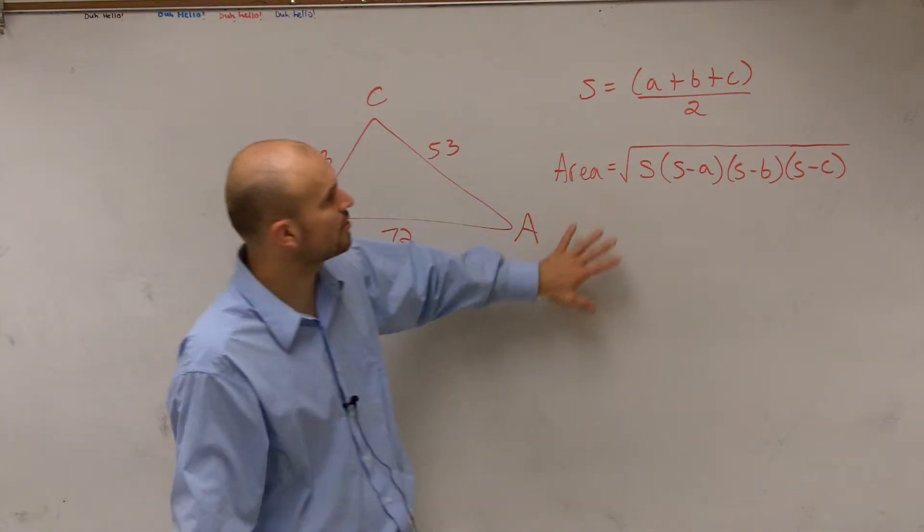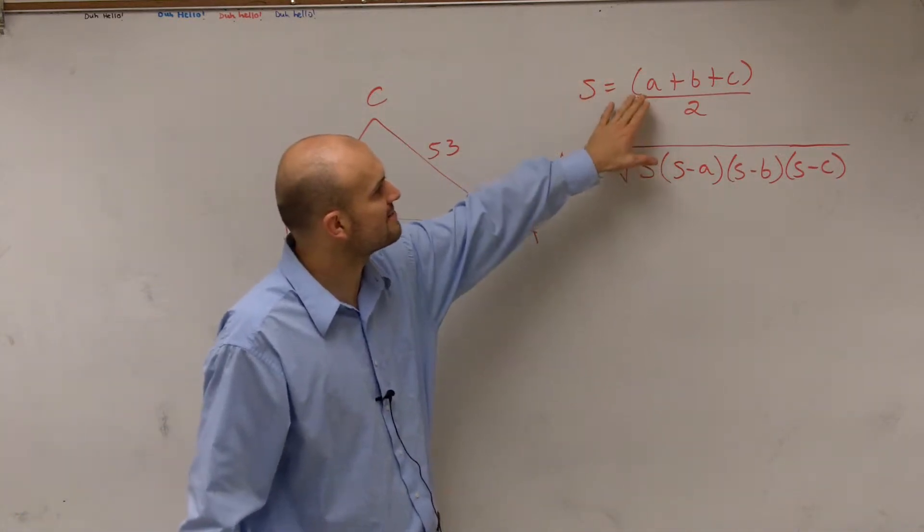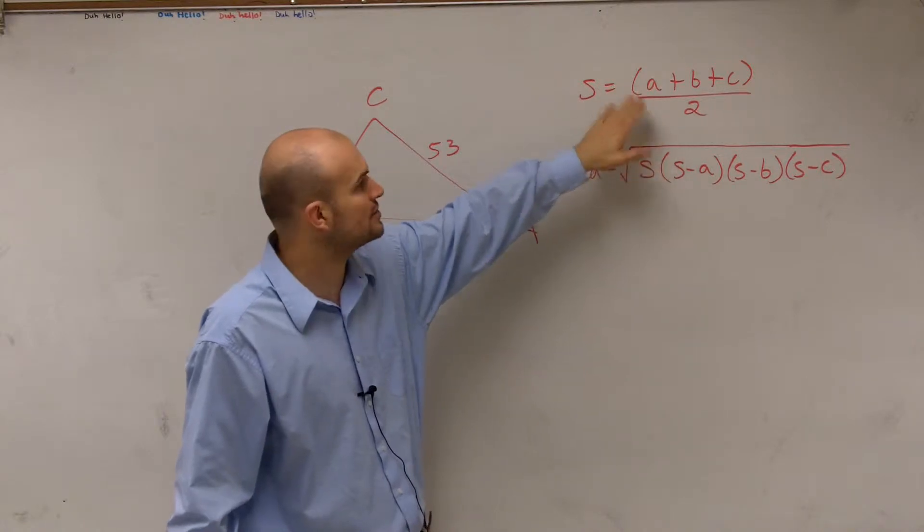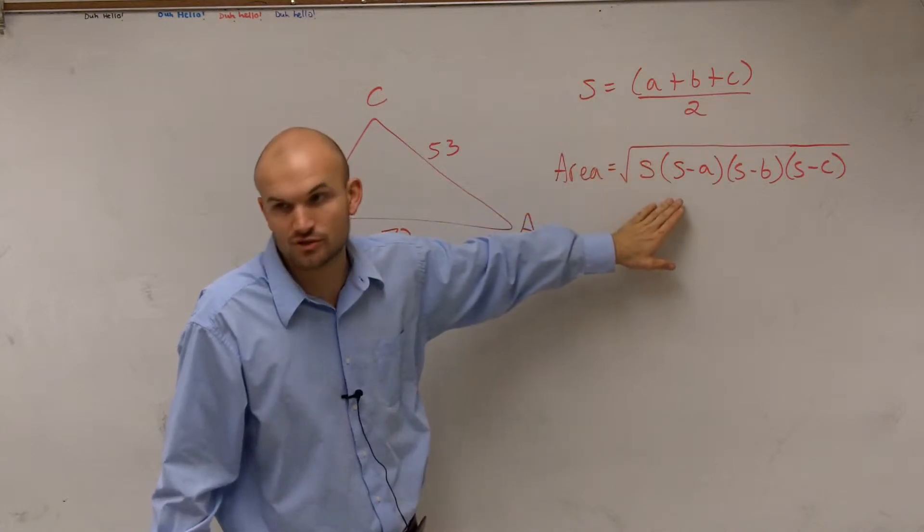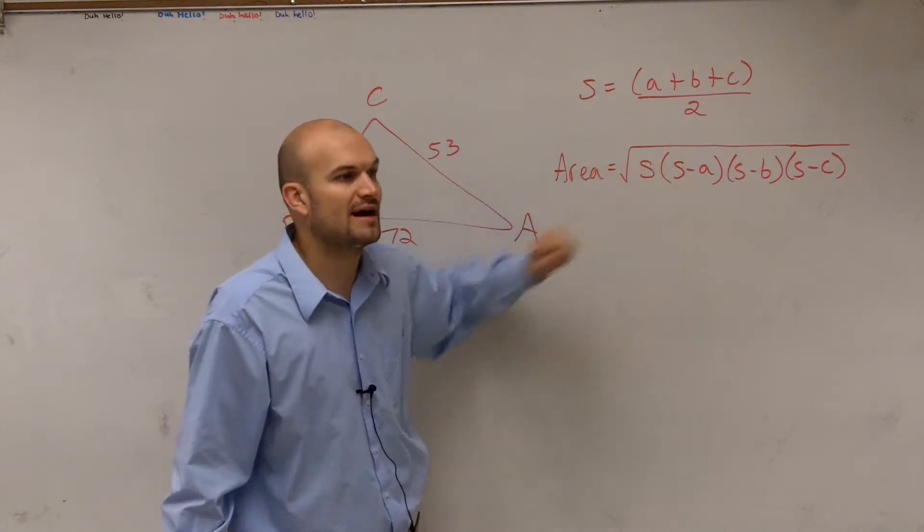All we're given is the side lengths. So what we can use is Heron's formula. What Heron's formula says is if I take a, b, and c divided by 2, I'm going to get a value s. I can then apply that value s into the square root of this formula to be able to find my area.